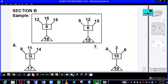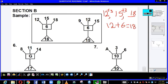Now let's proceed to Section B. In Section B, we are going to carefully look at the sample before we proceed. Here we have: 12 plus 3 equals 15, 15 plus 3 equals 18, 12 plus 6 equals 18, and 18 minus 12 equals 6.